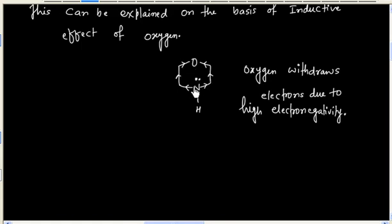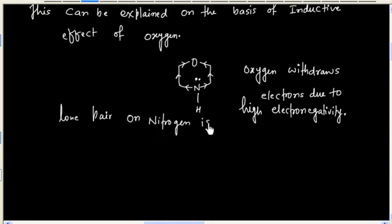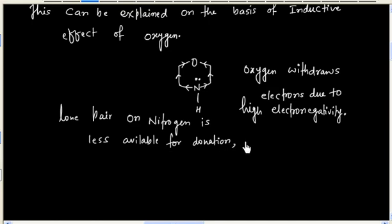So the lone pair on nitrogen gets diffused and is less available for attack or donation. Therefore morpholine is less basic.